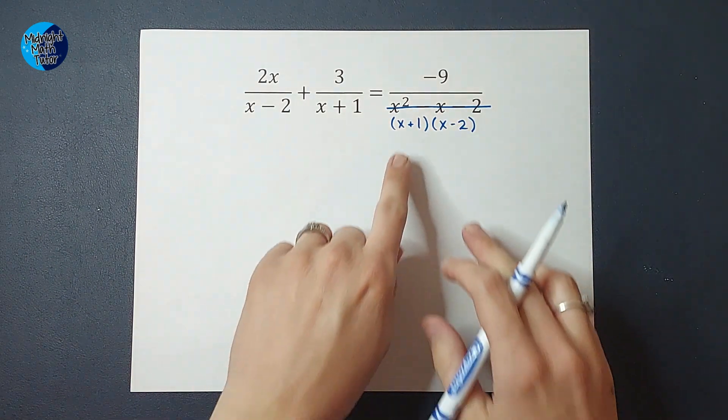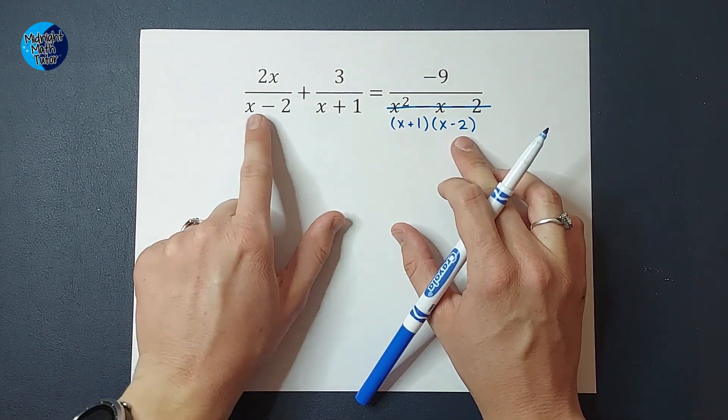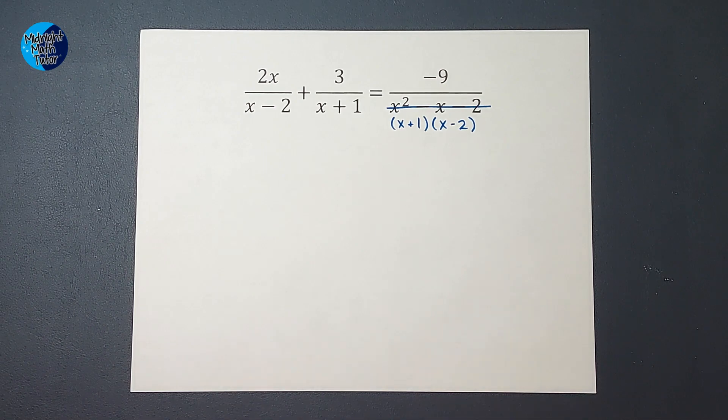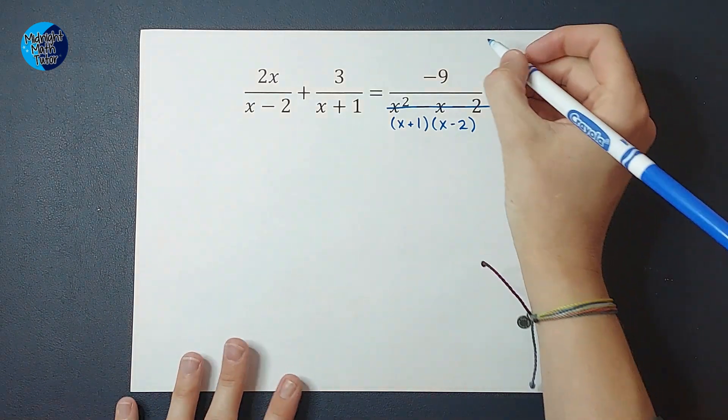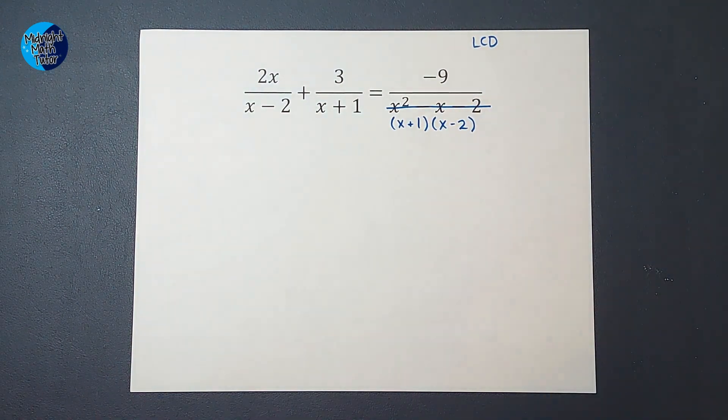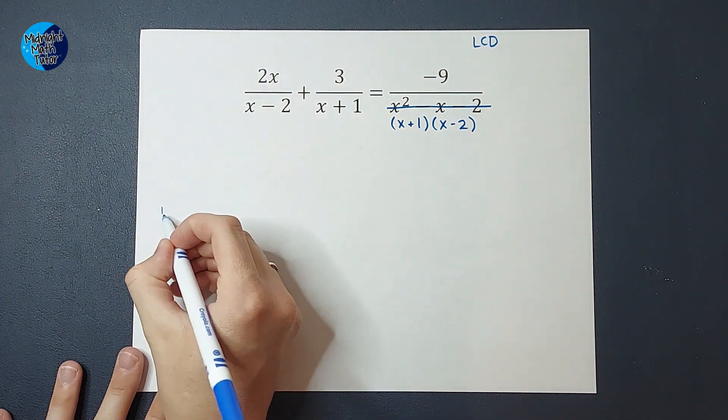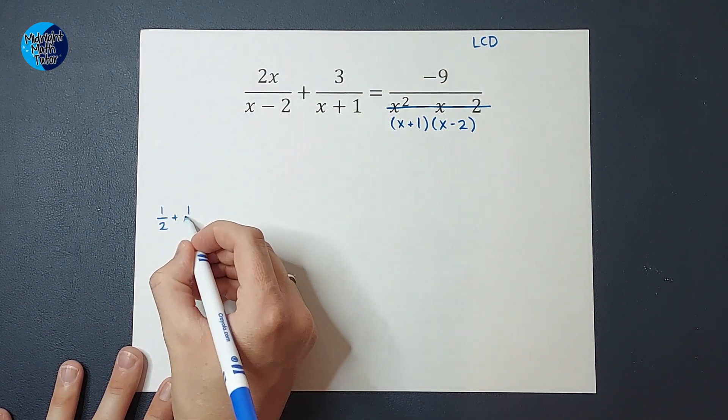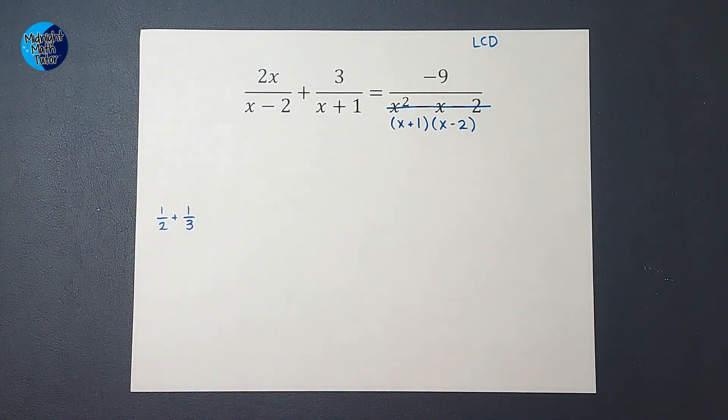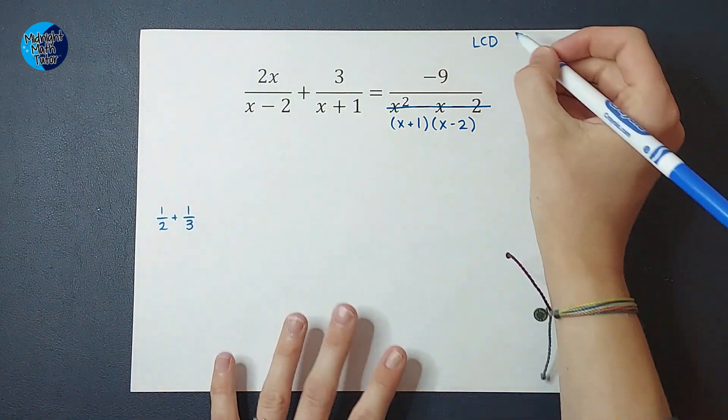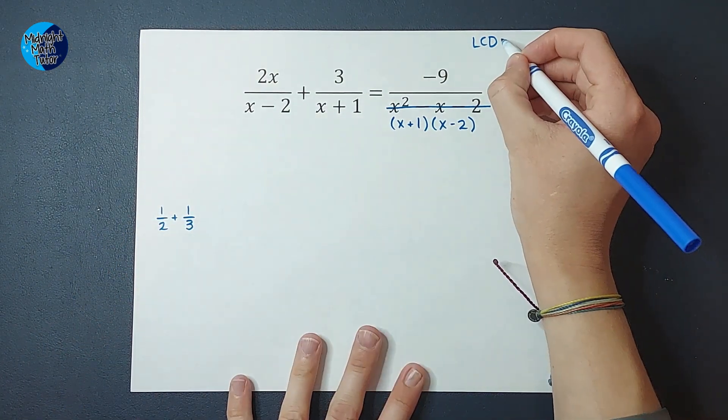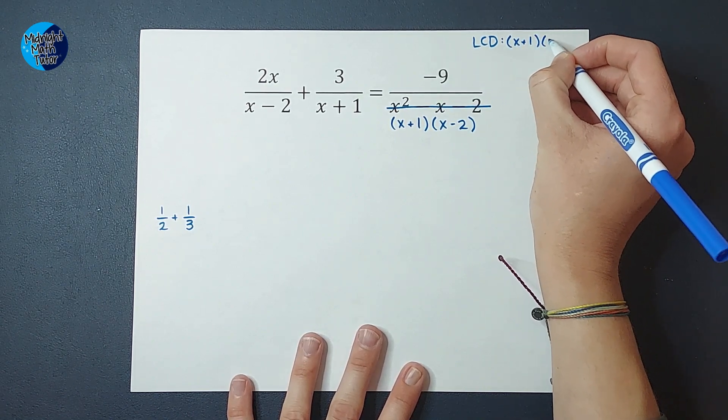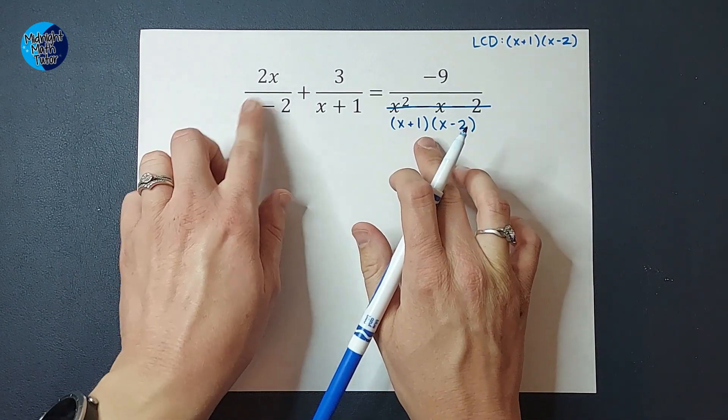So now what I notice is I've got x plus 1 here, x plus 1 here, x minus 2, and x minus 2. So that is helpful that we're seeing some similarities here. So what I'm looking for next is called my LCD, my least common denominator. This is just like when you add and subtract fractions, right? If you were adding 1 half plus 1 third, hopefully your brain was just like, oh, my least common denominator is 6, right? That's the smallest number they both go into. In this case, we just multiply the denominators. So my LCD is x plus 1 times x minus 2. All of these divide into that.